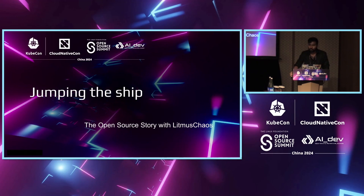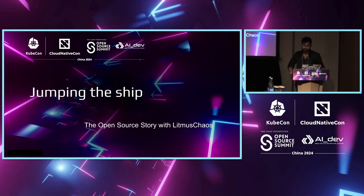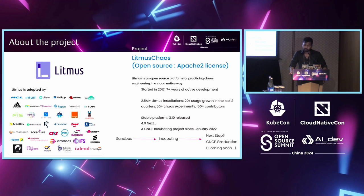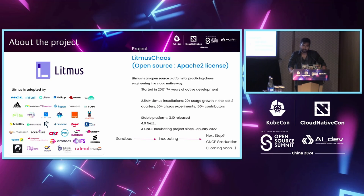Now we'll start with the Litmus Chaos story. This is how I've been working for the last four and a half years and helped build a very popular community — a good example for others aspiring to build new open source communities. Litmus is an open source project based on cloud native chaos engineering. It's a very popular project, almost at version 3.11, hoping to graduate soon. It has seen immense usage growth: 30 million plus Docker pulls, 2.5 million plus installations, adopted by so many companies around the world. It's now a CNCF incubating project.